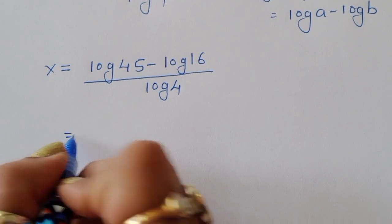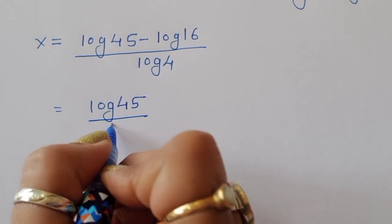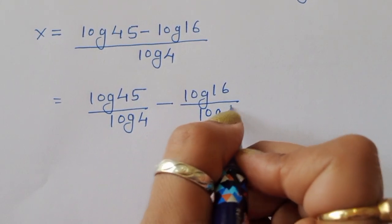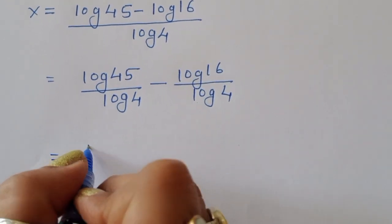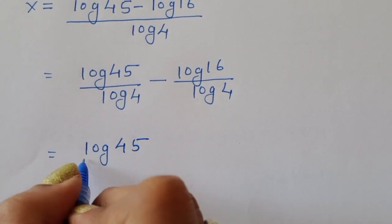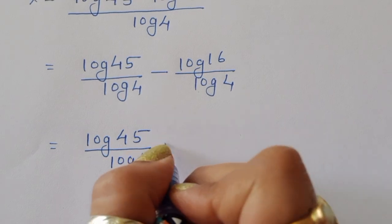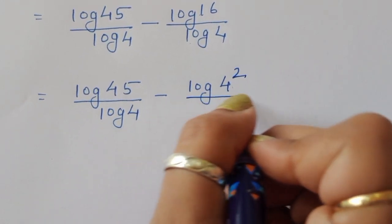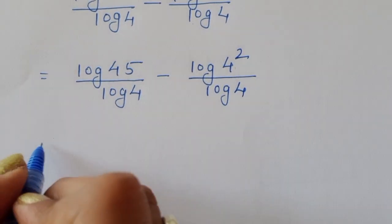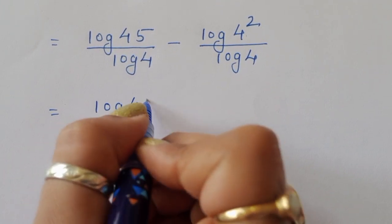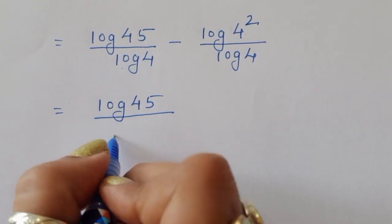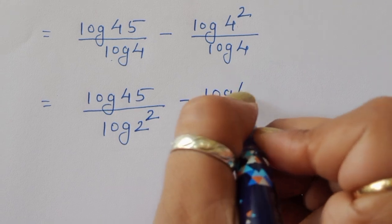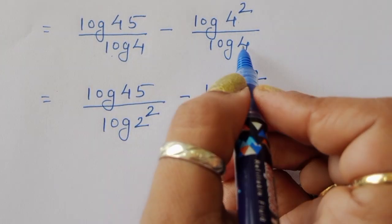We separate the terms: x equals log of 45 divided by log of 4, minus log of 16 divided by log of 4. Now, 16 can be written as 4 squared, and 4 can be written as 2 squared. So we have log of 45 divided by log of 2 squared, minus log of 4 squared divided by log of 2 squared.